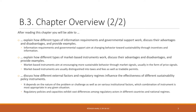Furthermore, you will explain different types of information requirements and governmental support as another type of regulation, and again discuss their advantages, disadvantages, and provide examples. Such information requirements and governmental support aim at changing behavior towards sustainability through incentives and information, making them less direct than command and control instruments.